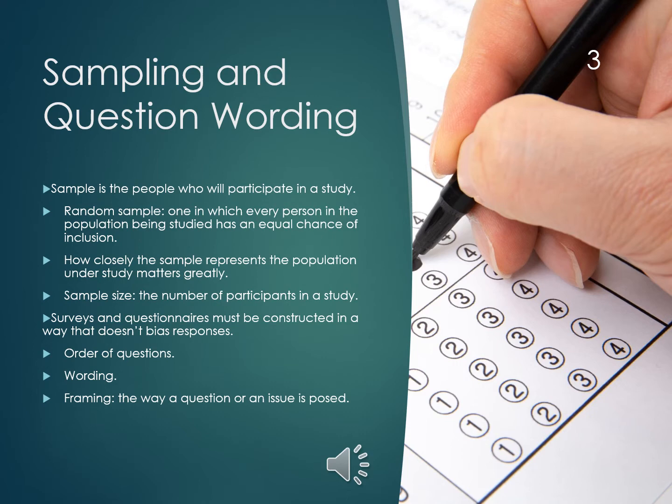There are other types of probability sampling such as systematic sampling, stratified sampling, and cluster sampling. We do have other options, but simple random sampling is the one we use the most.